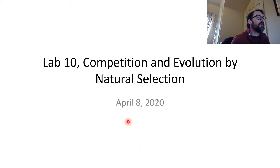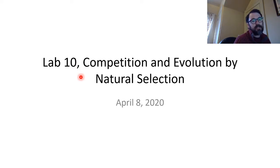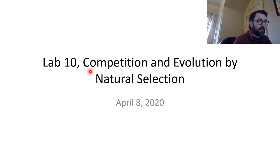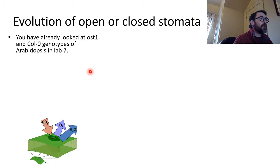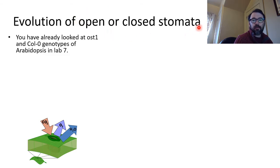This is the pre-lab talk for Lab 10, Botany 111, which would have been on April 8th. What we're going to think about today is competition and evolution by natural selection — in particular, the evolution of open or closed stomata, or rather the ability to control stomata.